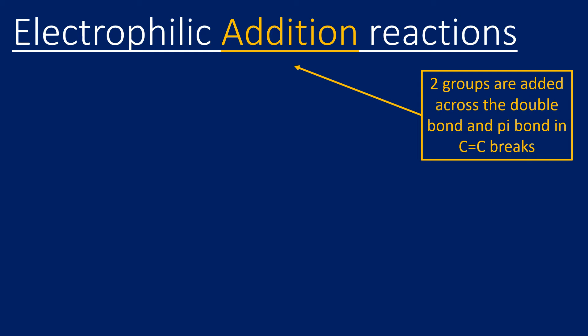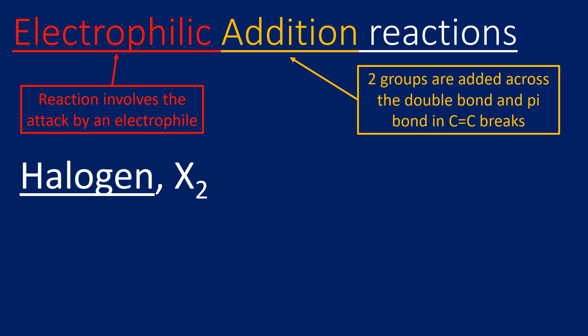So these reactions are known as electrophilic addition. Addition because we're adding two groups across that pi bond or across the double bond, and electrophilic because it involves the attack of an electrophile. In this case we're looking at halogens X2.